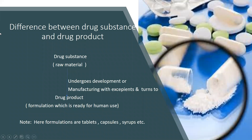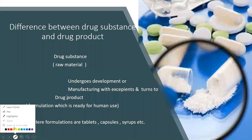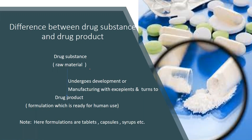Here we can discuss the difference between drug substance and drug product. Drug substance is a raw material or active pharmaceutical ingredient. It undergoes development or manufacturing with various excipients and turns into a drug product, which is a formulation ready for human use.